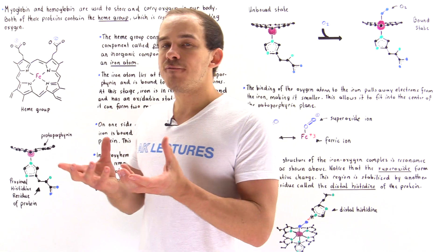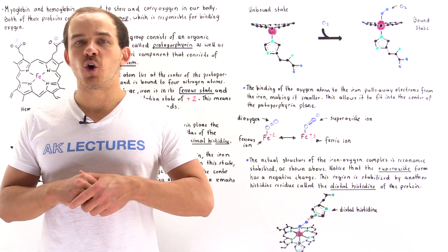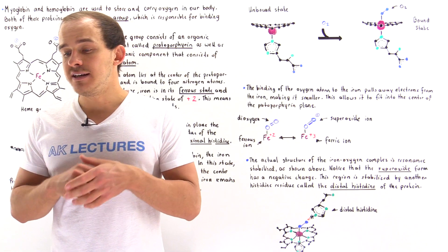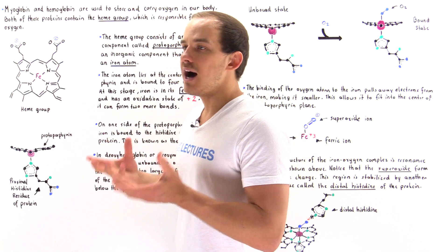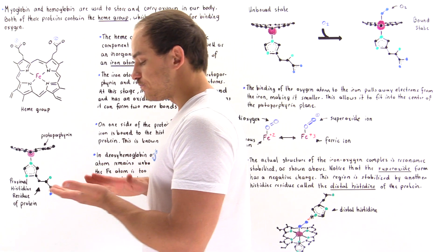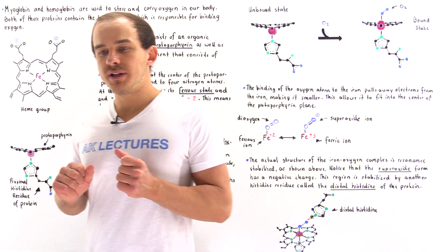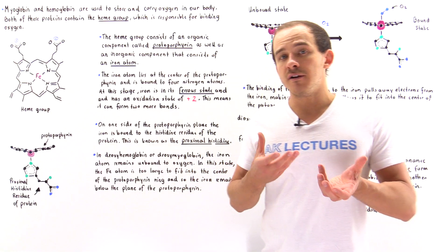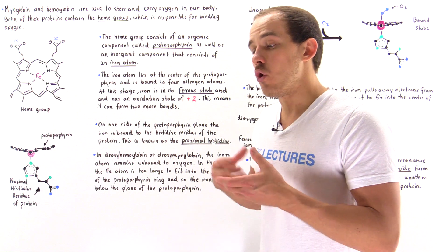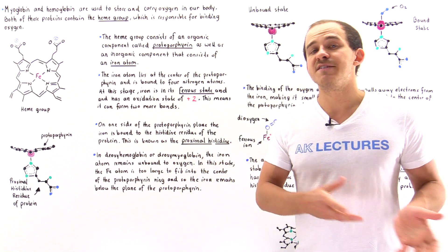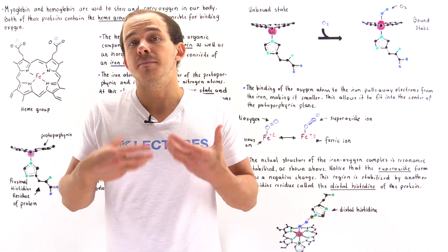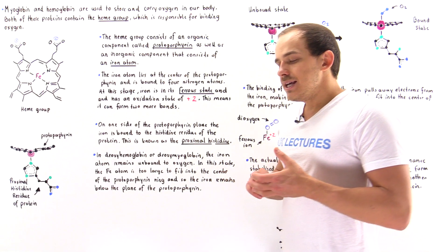These four polypeptide chains give the hemoglobin molecule quaternary structure, and that's exactly what gives hemoglobin the ability to bind oxygen cooperatively — we'll see what that means in the next lecture. What hemoglobin does is it continually delivers oxygen from the lungs to the tissues and cells of our body, and it also binds CO2 and brings the carbon dioxide back to the lungs so that the carbon dioxide can be expelled.